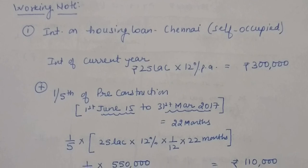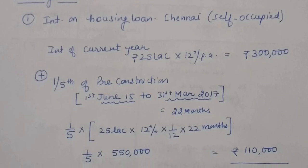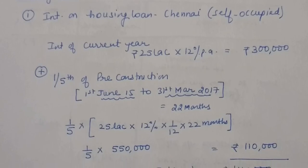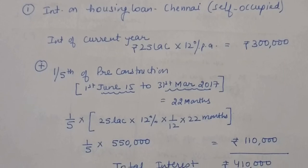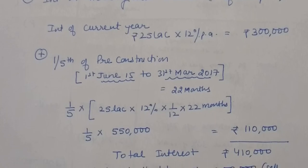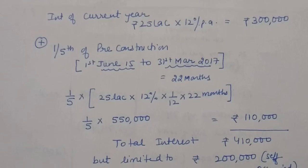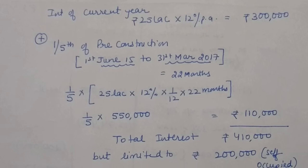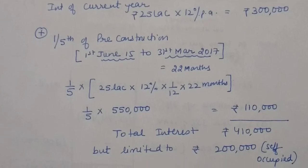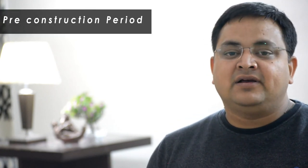In Working Note 1, first calculate current year interest. Since 25 lakh is still fully outstanding, the previous year is 18-19. Calculate 12% on 25 lakh for the current period. Although this exceeds 2 lakh, we show it because pre-construction details are also mentioned. Now, for many students there is confusion about the pre-construction period — but it is quite easy to calculate.